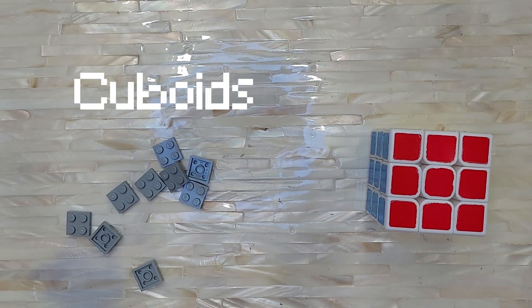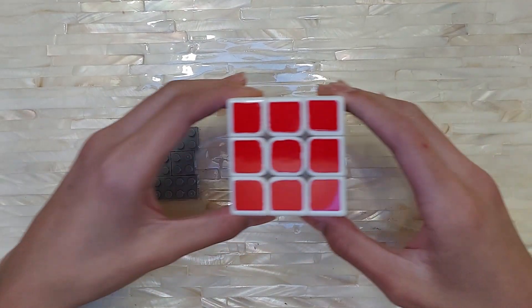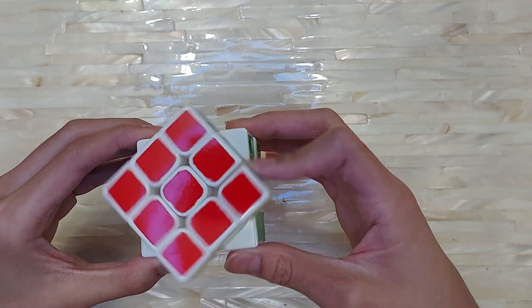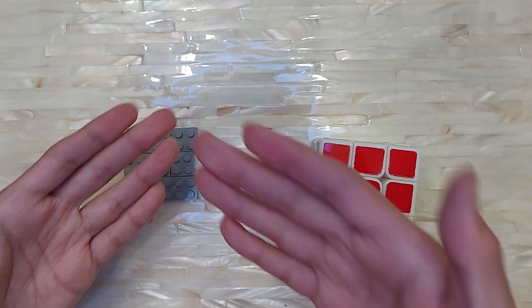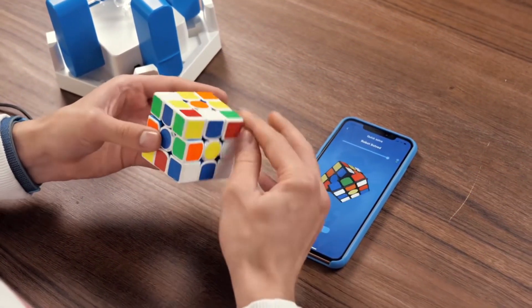A Rubik's Cube is made up of 27 smaller pieces, or cuboids. Once combined, these cuboids work in such a way so that the layers of the big cube can rotate. Now this is cool and all, but how do we make a computer actually solve one of these cubes?